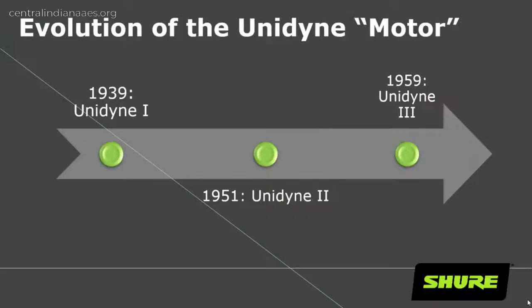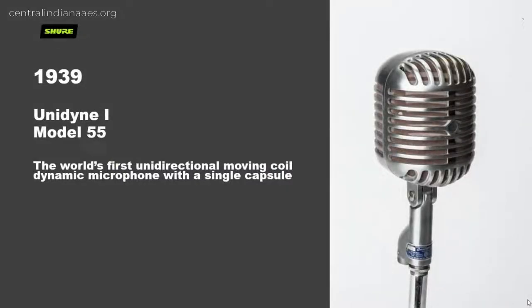Gino and I are going to tag team this — normally we'd be in the same room, but tonight we'll cover the history of the Shure Unidyne microphones: the One, Two, and Three, starting with the Model 55 all the way up to the SM58. Here's the evolution of the Unidyne motor — the term 'motor' in a microphone sense refers to the element inside. The Unidyne One came out in 1939, Unidyne Two in 1951, and Unidyne Three in 1959.